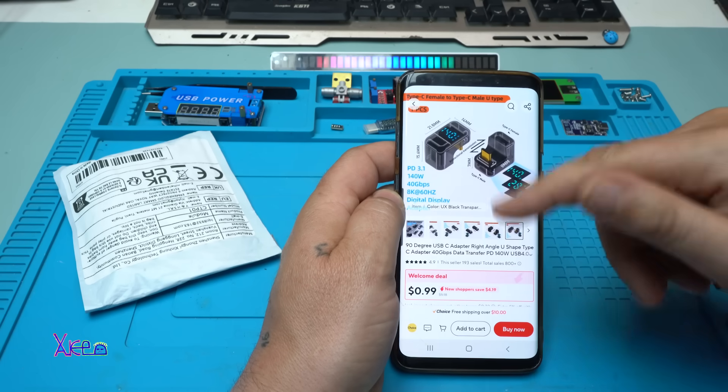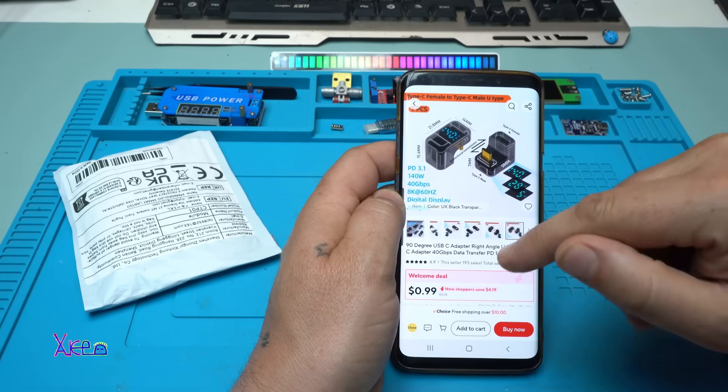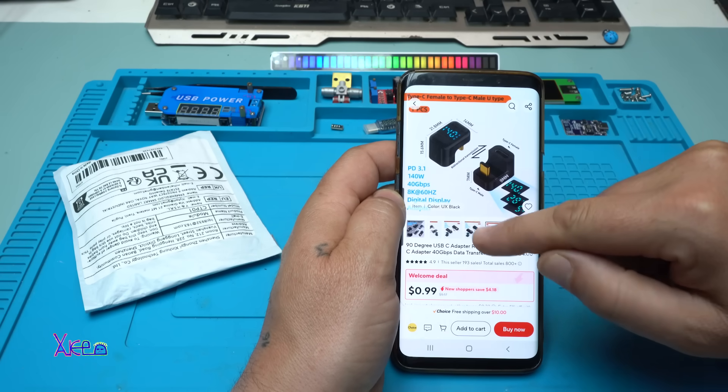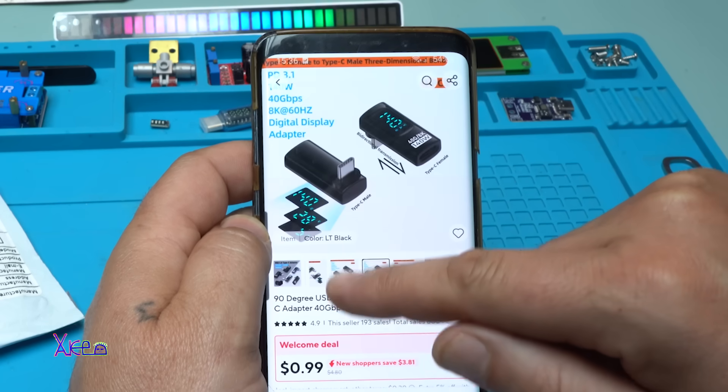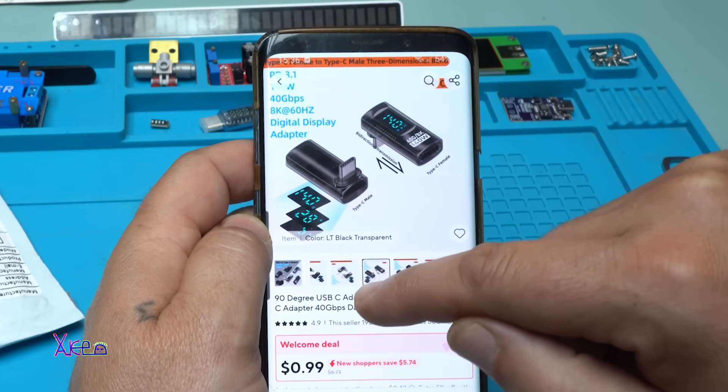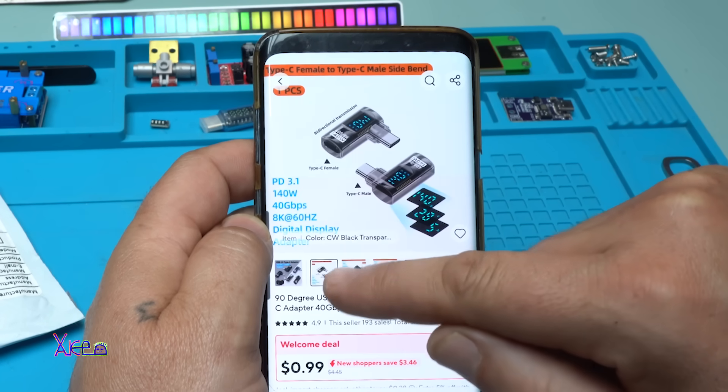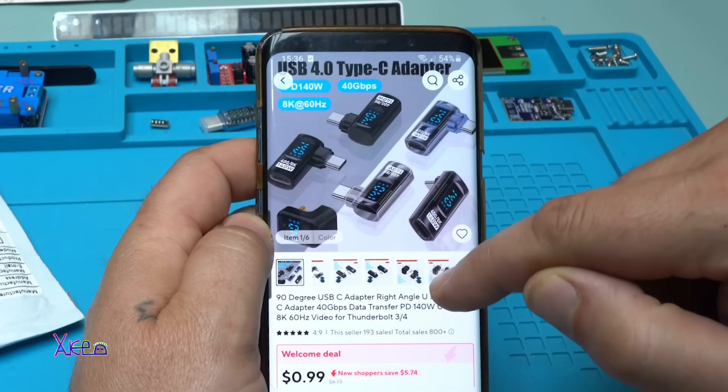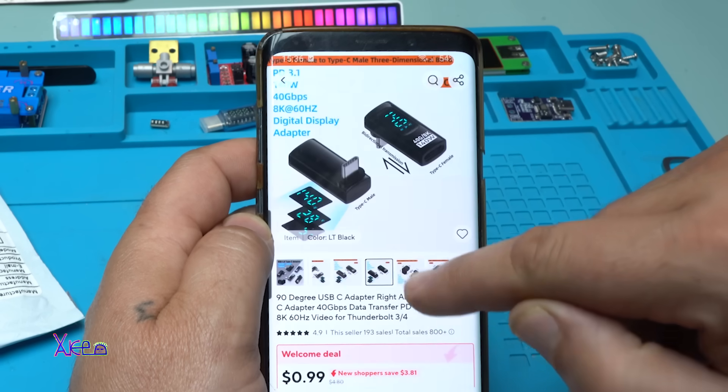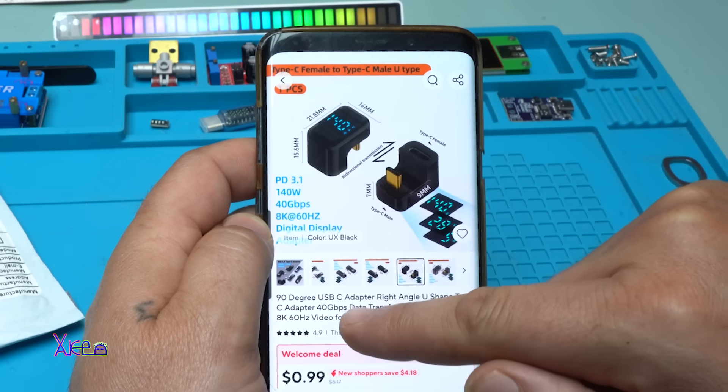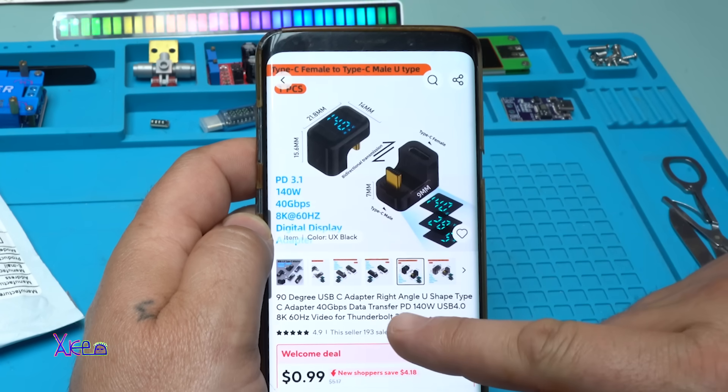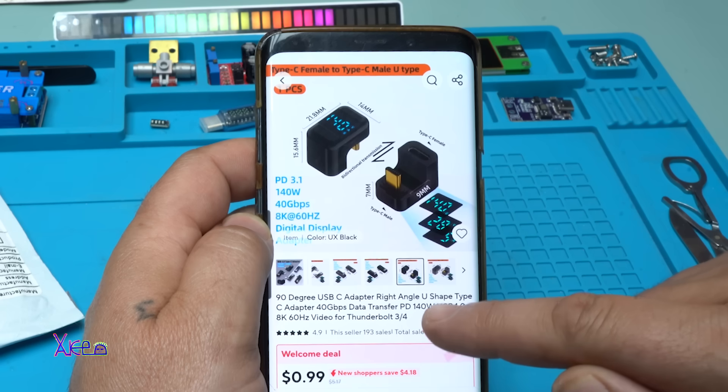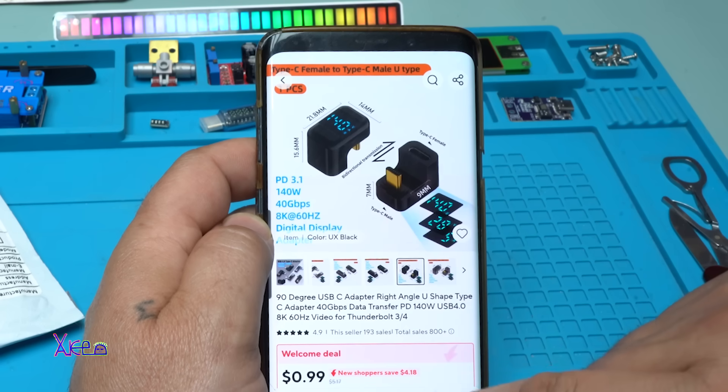From AliExpress for around one to five US dollars, you can choose different kinds of USB Type-C adapters with voltage and ampere meter. I chose this one: a 90-degree USB-C adapter, right angle U-shape Type-C adapter, 40 gigabytes per second data transfer, PD 140 watts, USB 4.0, 8K 60 hertz video for Thunderbolt.